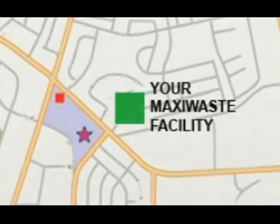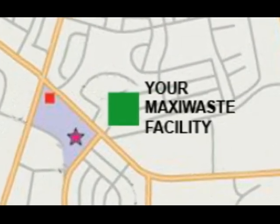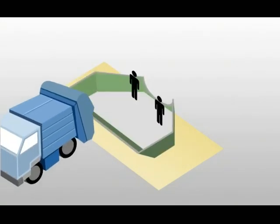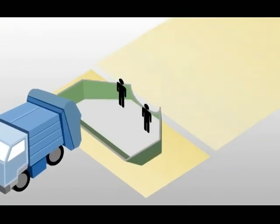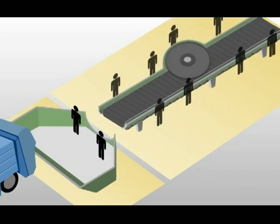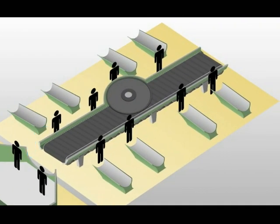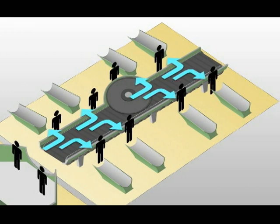This is how it works. Garbage collected from your municipality is delivered to your local MaxiWaste facility. After it has been dumped on the receiving depot, haulers will then start feeding the garbage into the conveyor belt. The garbage then passes through 8 primary sorting stations